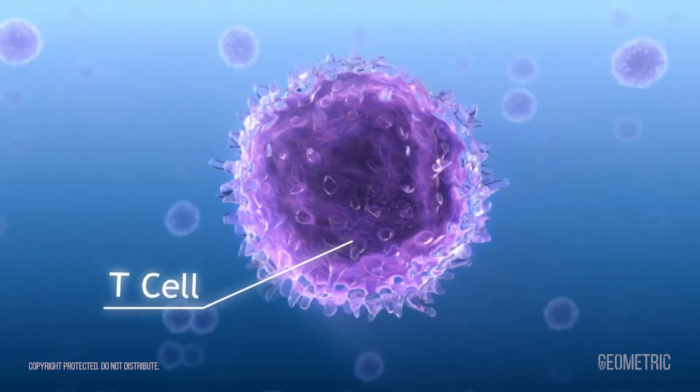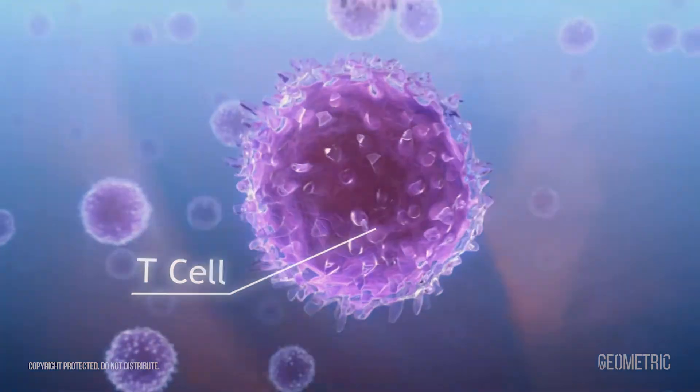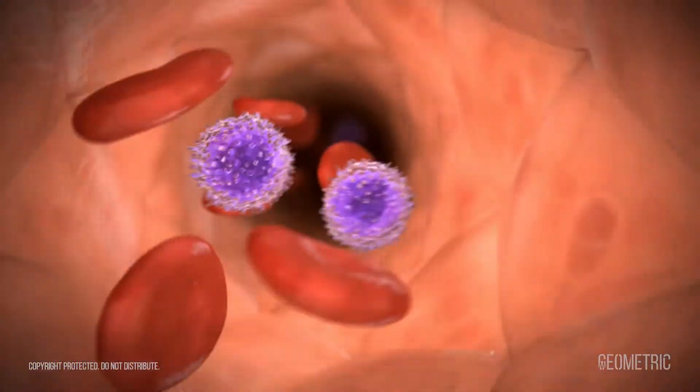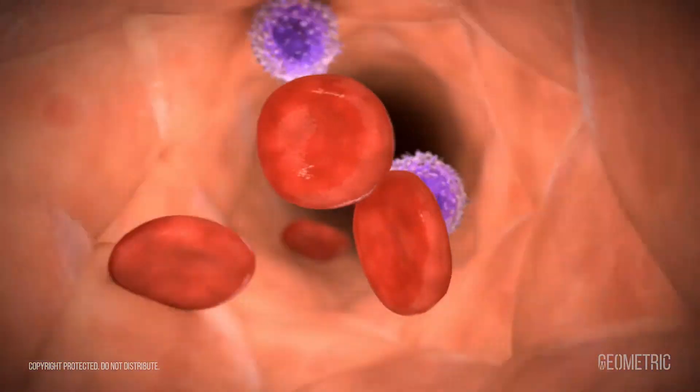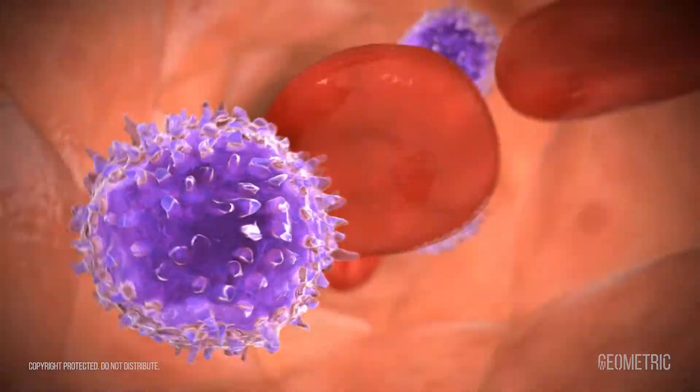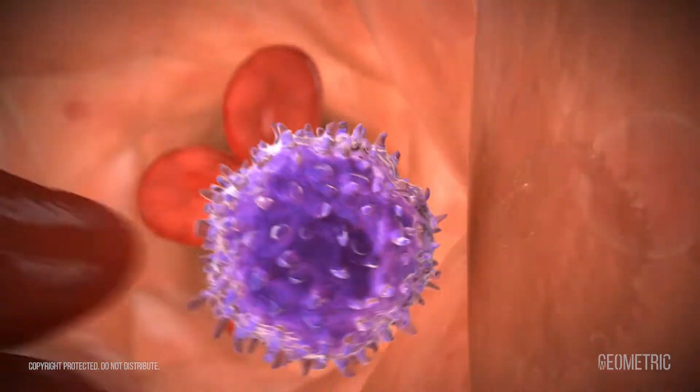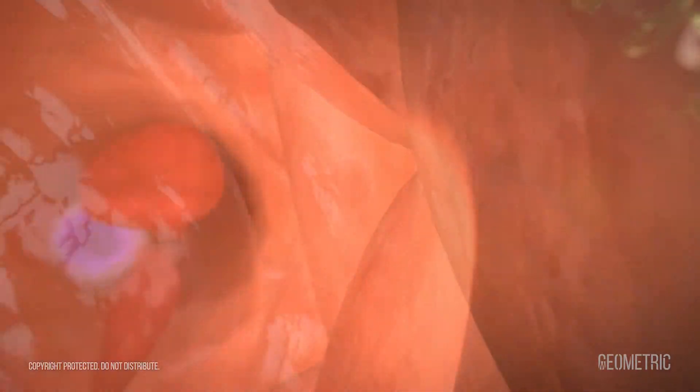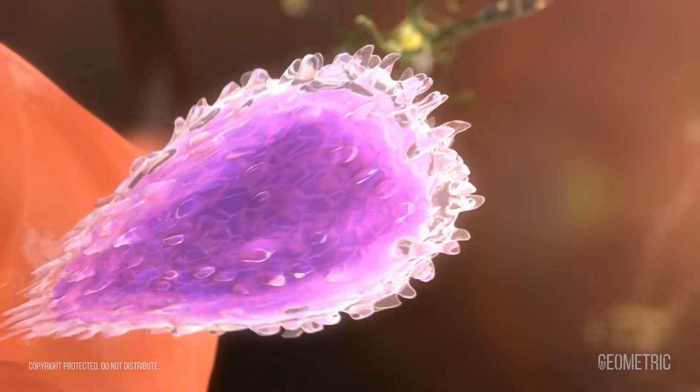In MS, an unknown trigger activates helper t-cells. This enables the t-cells to adhere to and cross over the blood-brain barrier, which normally prohibits the flow of substances into the brain.